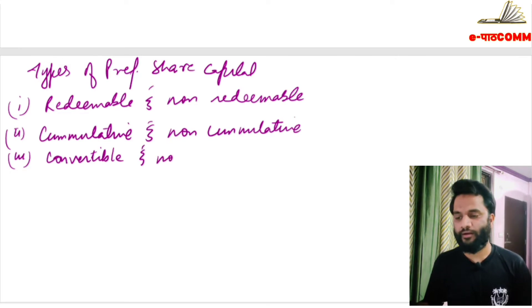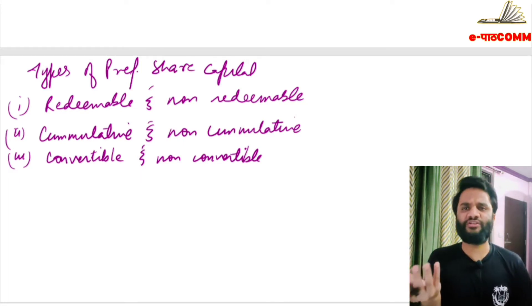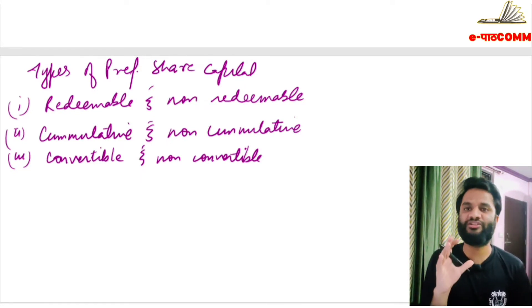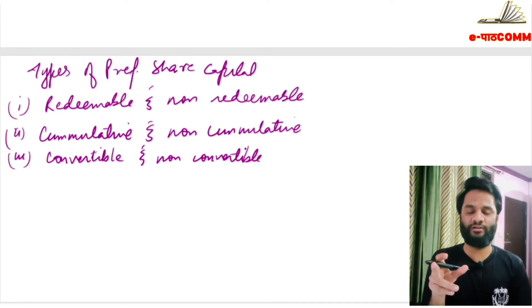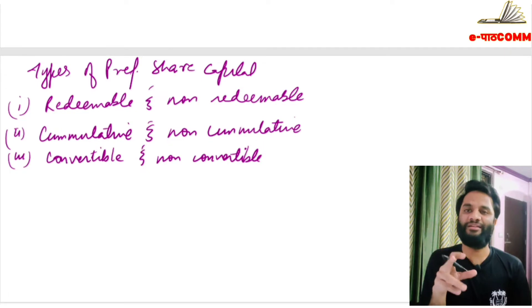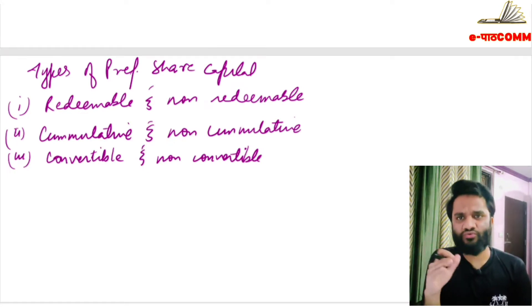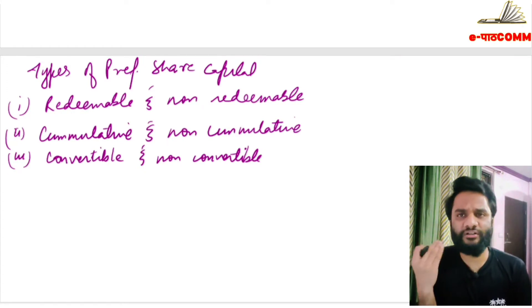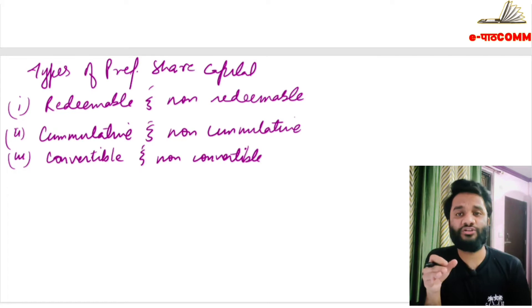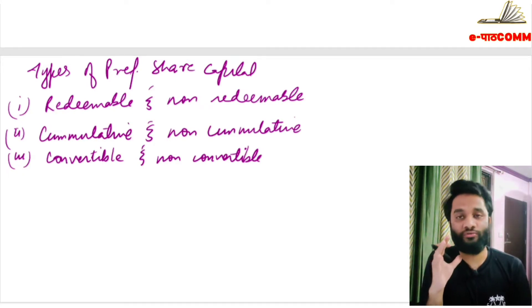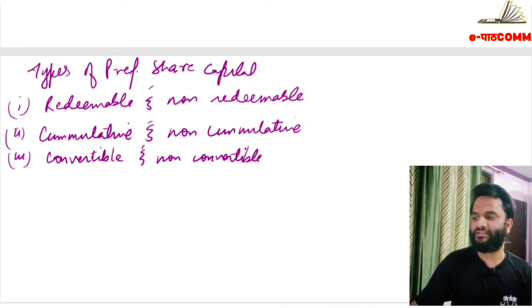The third type is convertible and non-convertible preference shares. Convertible preference shares are those which can be converted into equity shares after a certain time period. Note: shares can never be converted into debentures — only debentures can be converted into shares. Non-convertible preference shares are those which cannot be converted at all. So these are the types of preference shares.